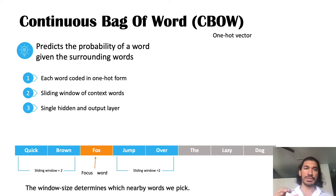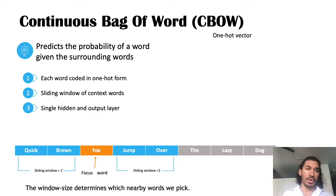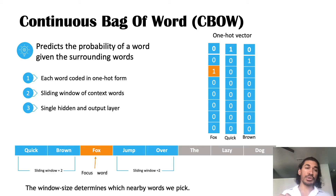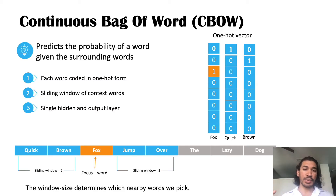The whole idea of Continuous Bag of Words (CBOW) is that we have the context words — the surrounding words — and our goal is to maximize the probability of the focus word, meaning we're trying to predict the focus word given all the surrounding words. Each word in the corpus is encoded in one-hot form. The word fox will be one and everything else will be zero; the word quick will be one and everything else will be zero. We then choose our sliding window — it's a parameter we'll have to tune, and it's good to keep it less than 10 for better probability.